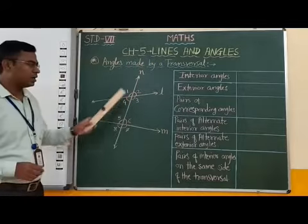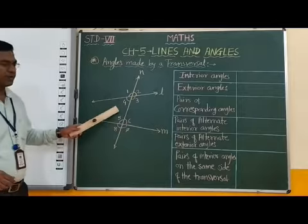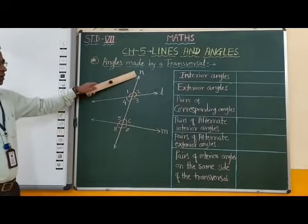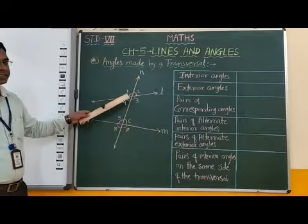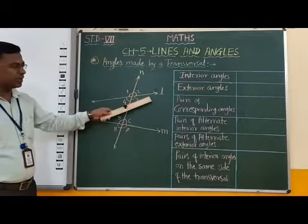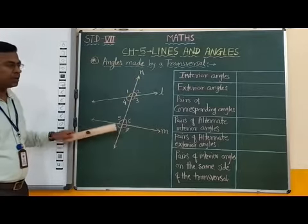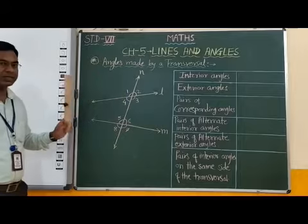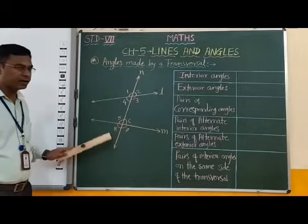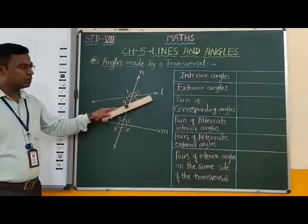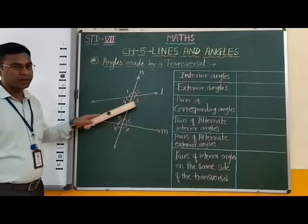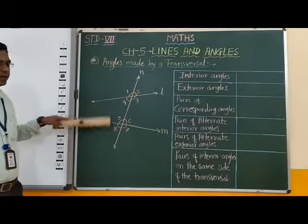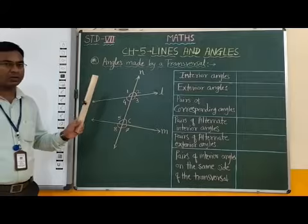Here I have drawn a figure. In this figure, line M intersects line L and line N at two different points. Therefore we can say that line M is a transversal of line L and line N. Therefore line M is a transversal.